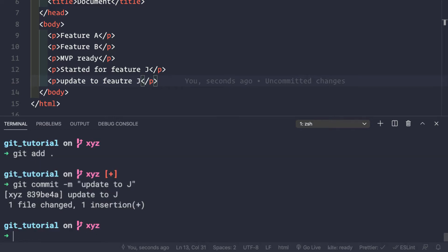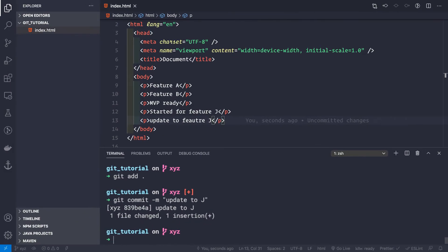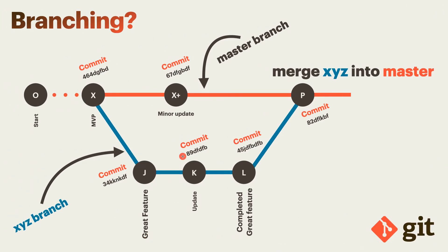Our feature j is not yet complete but we made a commit just to save the changes and the commit history. Now a minor bug appears in our application which was doing very well on the app store or play store. We need to switch back to the master branch and fix that bug with a minor update.